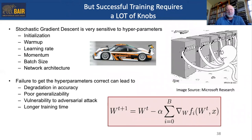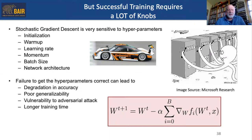A caveat regarding progress in deep neural net training: the stochastic gradient descent algorithm is very sensitive to hyperparameters like initialization, the warm-up period, precise learning rate, momentum, batch size, and the original network architecture. If you don't get those hyperparameters correct, you can see degraded accuracy, poor generalizability, even vulnerability to adversarial attack, and of course longer training time.